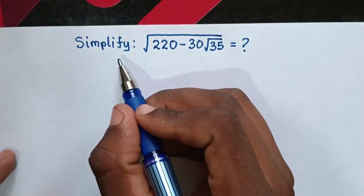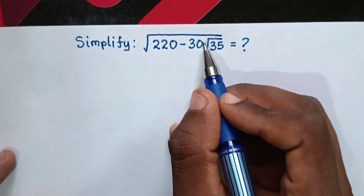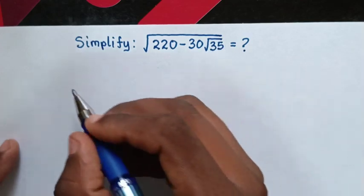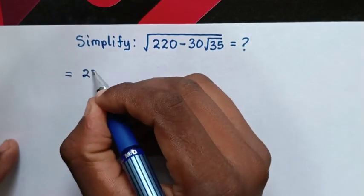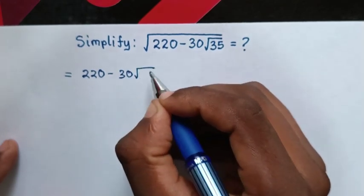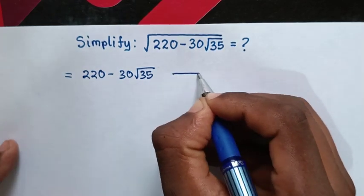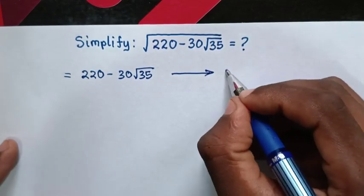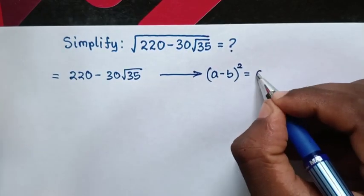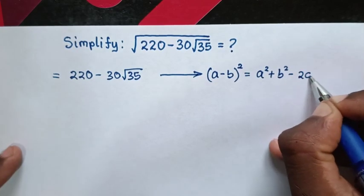Hello. How to simplify square root of 220 minus 30 square root of 35. So first, from this expression under the square root, which is 220 minus 30 square root of 35, this expression is in the form of a perfect square: (a minus b) squared is equal to a squared plus b squared minus 2ab.